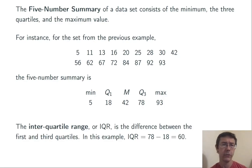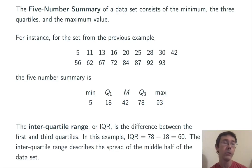The interquartile range, or IQR, is the difference between the first and third quartiles. In this example, IQR = 78 - 18 = 60. The interquartile range describes the spread of the middle half of the data set. It's not taking into account the extreme values in the data set, just sort of that meaty middle.